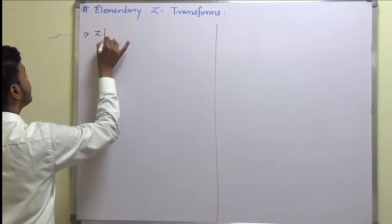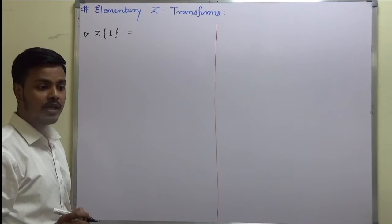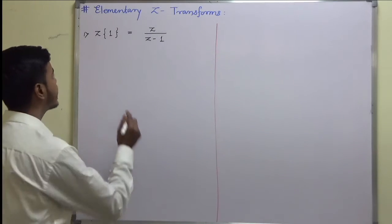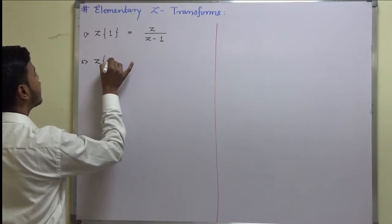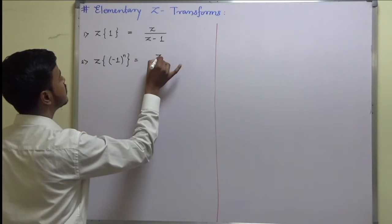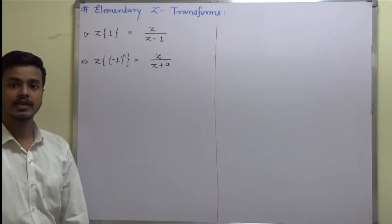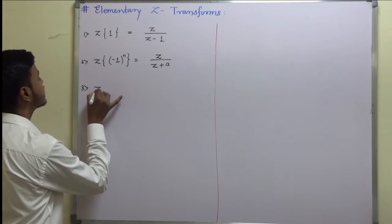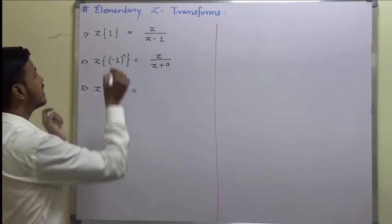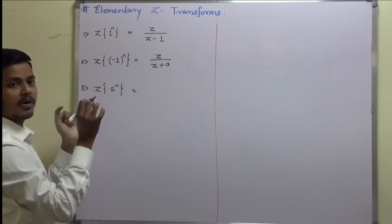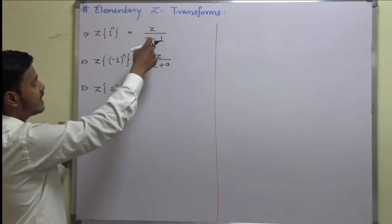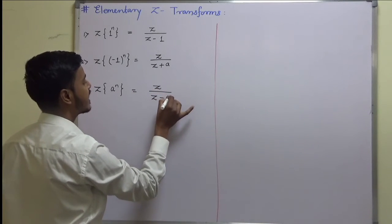The very first elementary Z transform is Z transform of 1, which is z/(z-1). The second one is Z transform of (-1)^n, which is z/(z+a). The third one is Z transform of a^n. Just looking at this, you can write whether it is Z transform of 1^n or 1 — and comparing, you can easily write down the Z transform of a^n, which is z/(z-a).